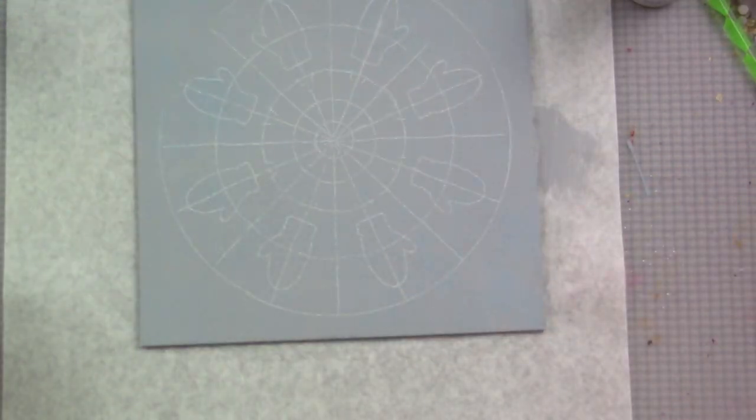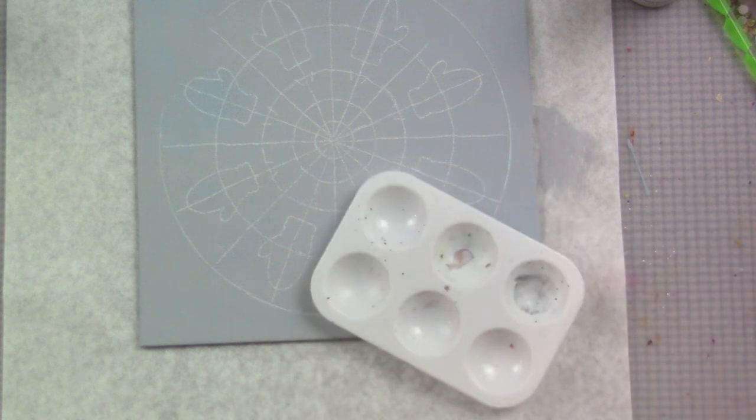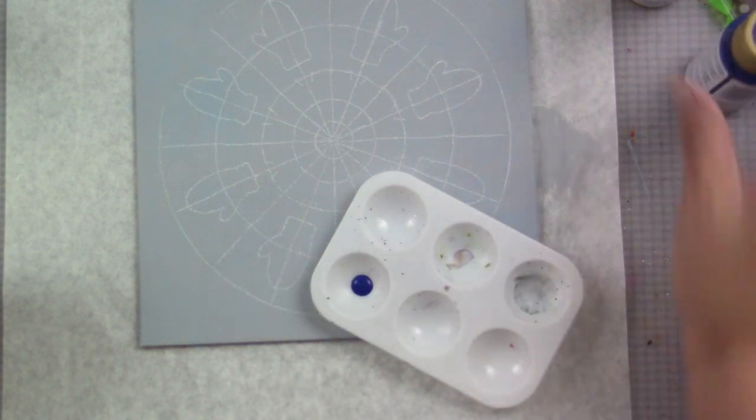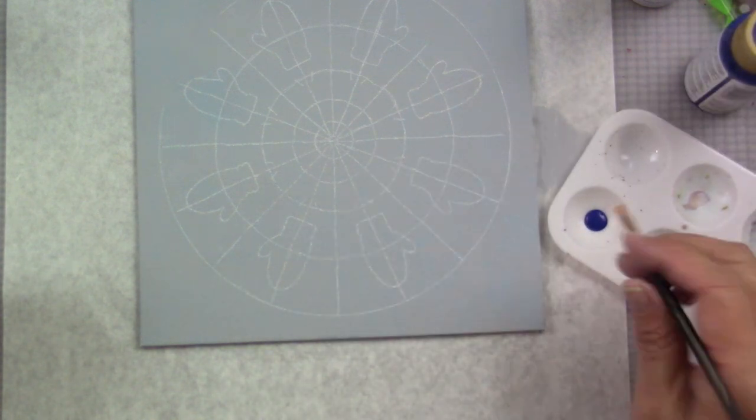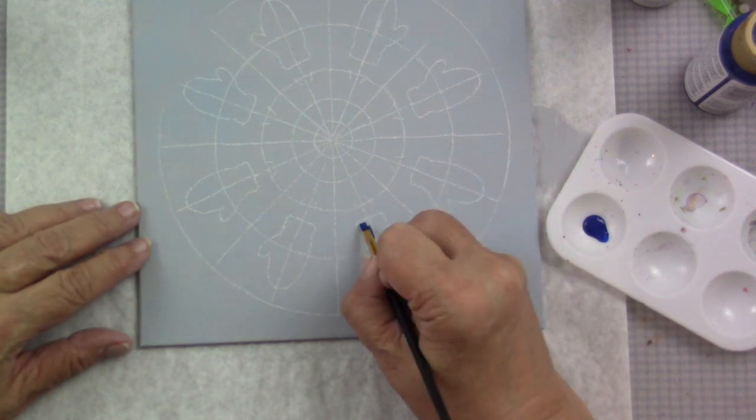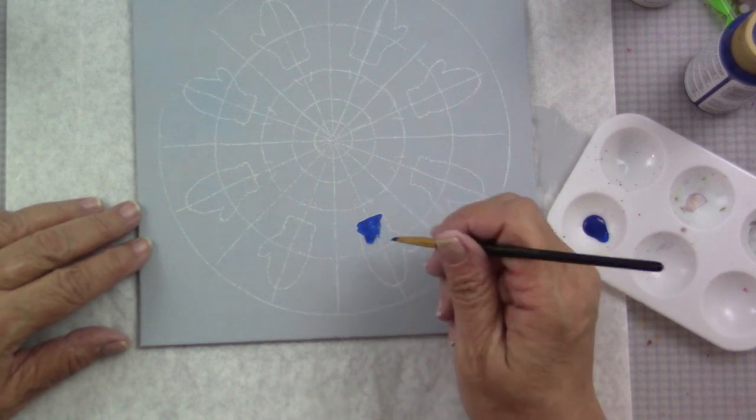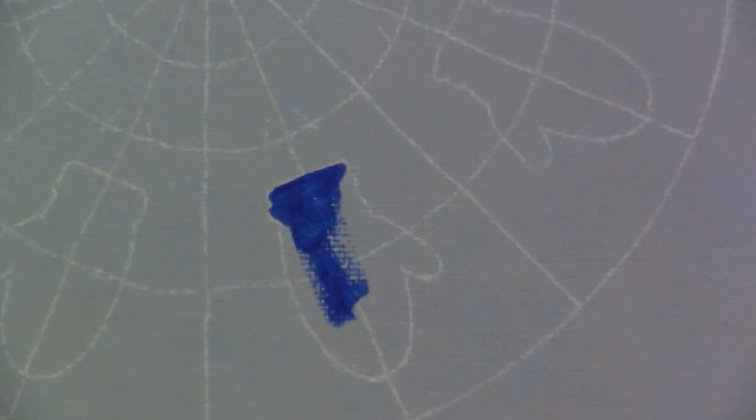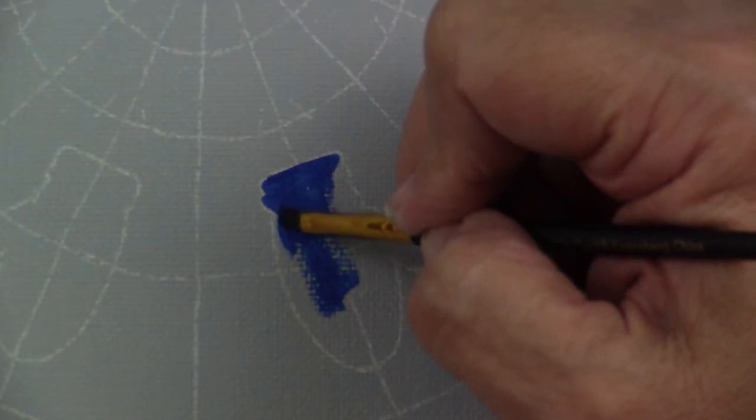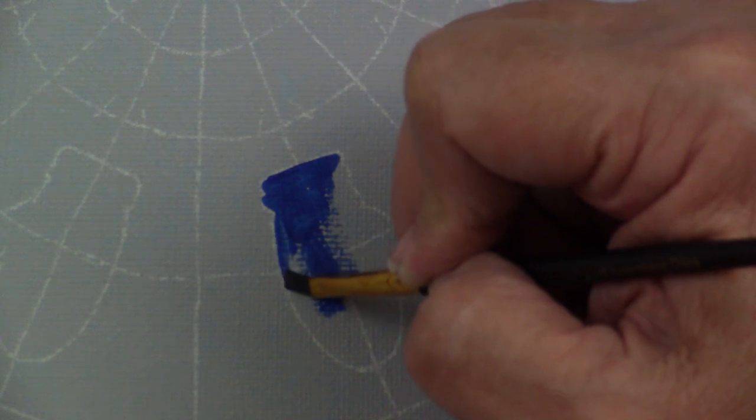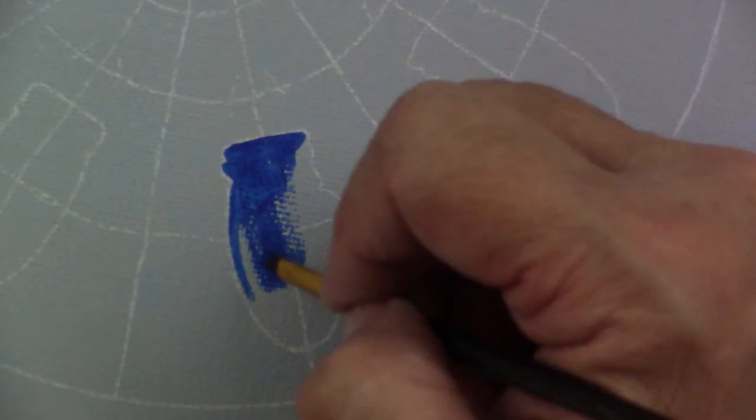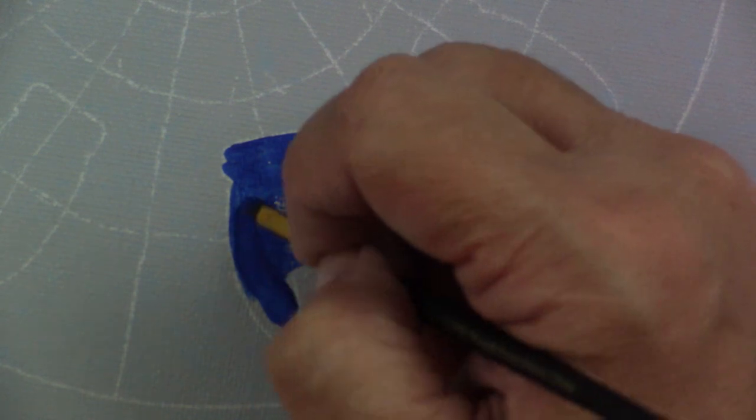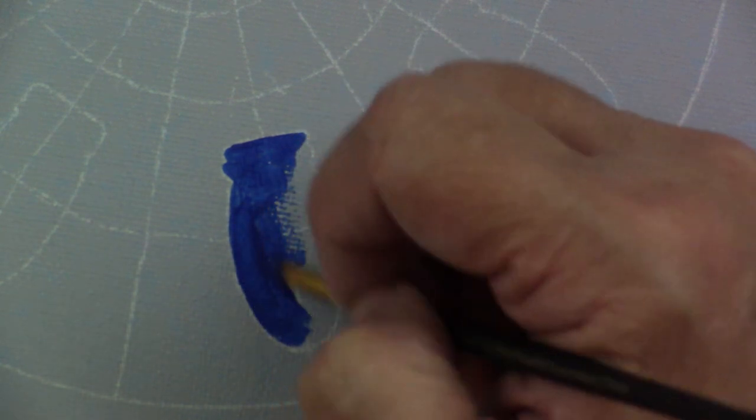Using my number two flat and the color Ultra Blue Deep. This is a very dark paint. The dots are dark. The mittens were perfect in color. I'm using my number two flat to just fill in these mittens. The flat brush gives me a nice edge, so it's easy to fill in these mittens.